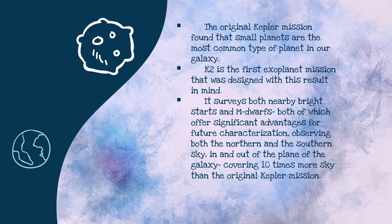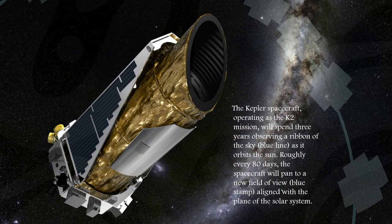The original Kepler mission found that small planets are the most common type of planets in our galaxy, and K2 is the first exoplanet mission designed with that result in mind, surveying both nearby bright stars and M-dwarf stars, both of which offer significant advantages for future characterization. Roughly every 80 days, the K2 spacecraft moves to a new field of view aligned with the plane of the solar system.